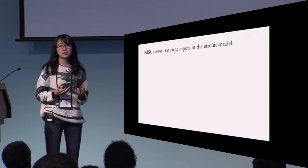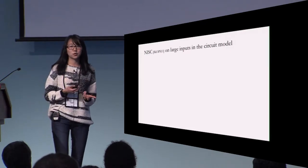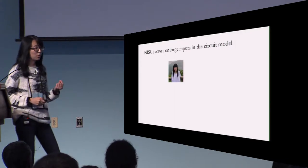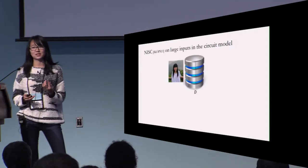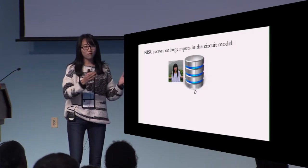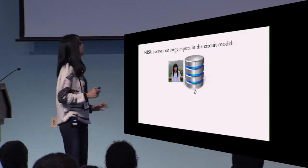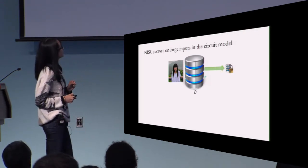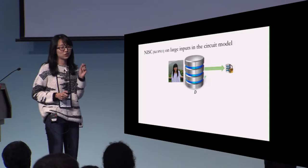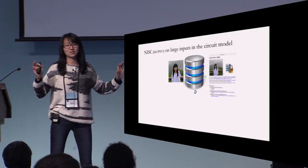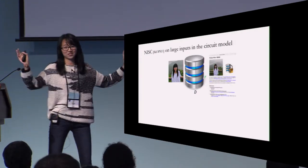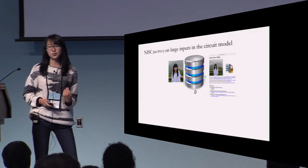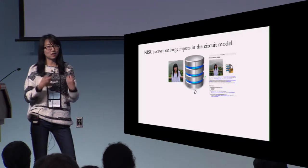We are particularly interested in the setting where one of the parties has a huge database, and the function we are computing is a Boolean circuit. This is secure computation on large inputs in the circuit model. The notion of non-interactive secure computation, or NISC for short, was introduced by Shai et al. in 2011. In the setting of NISC on large inputs, there is one party who has a huge database — say I have put all my data of my entire life in this database — and I somehow compute a succinct commitment of my huge database and publish it to the world, putting it on my homepage.